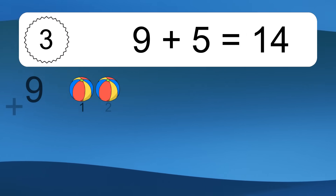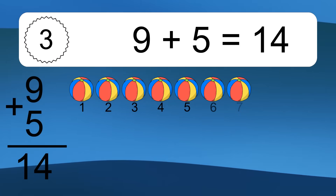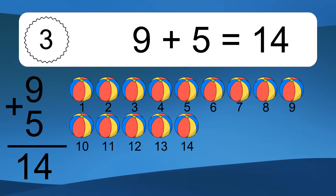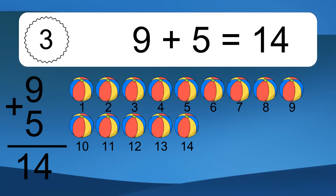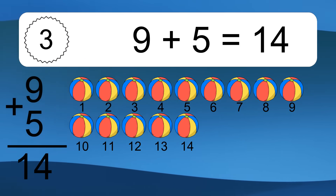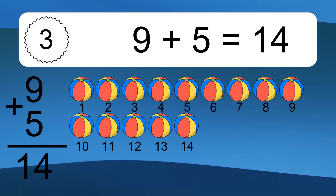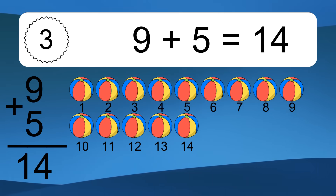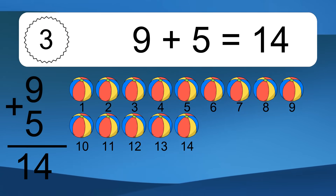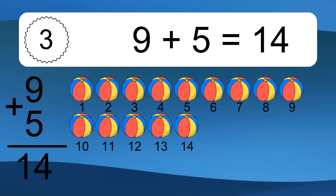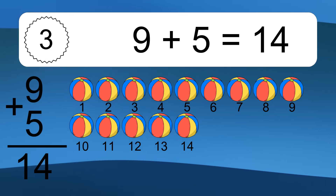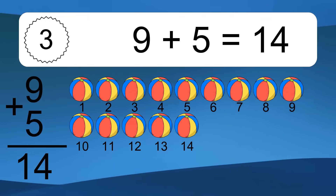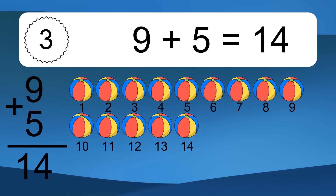9 plus 5 equals what? 9 plus 5 equals 14. Let's count it: 1, 2, 3, 4, 5, 6, 7, 8, 9, 10, 11, 12, 13, 14.